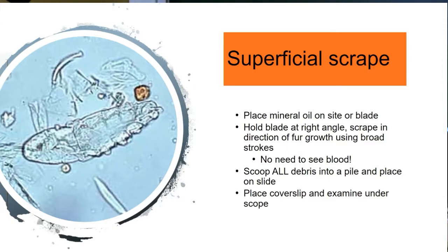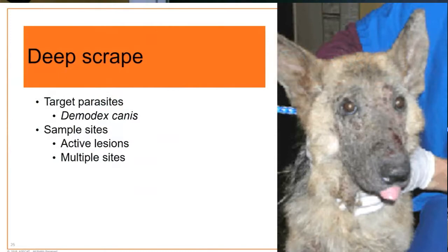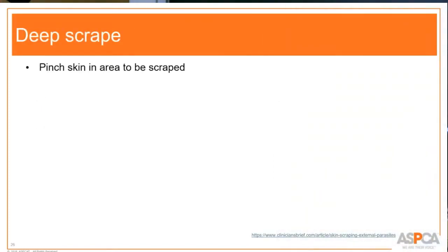For the superficial scrape, put mineral oil on the blade or the site — I'd dip my blade into oil on the slide. Hold the blade at a right angle and scrape in the direction of fur growth. You do not need to see blood for a superficial scrape. Scoop up all the debris, put it on the slide, add a little more mineral oil if needed, drop a cover slip on it, and take a look.